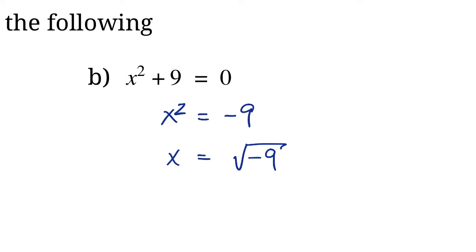Because we're square rooting both sides, we also have to consider the positive and negative case. So this is usually where we'd stop — we'd say there are no solutions to this problem because nothing times itself is going to give us negative 9. The square root of negative 9 doesn't exist. If you tried on most calculators, it's going to say error if you try to do the square root of negative 9. But that's not the whole story.